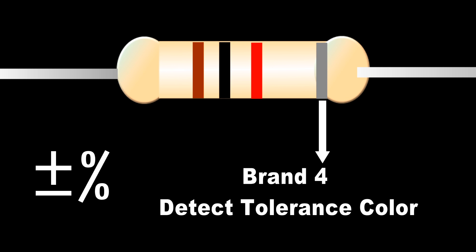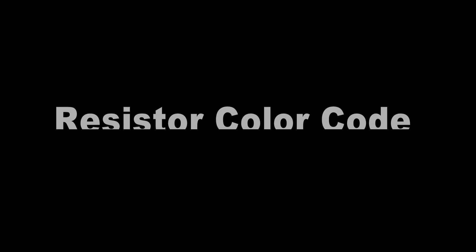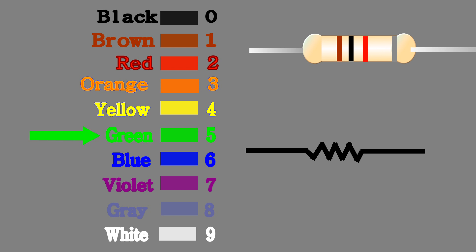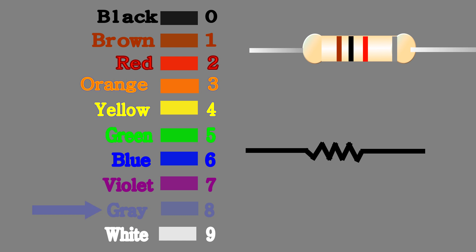Also detect tolerance value. Black is zero, brown is one, red is two, orange is three, yellow is four, green is five, blue is six, violet is seven, gray is eight, white is nine.